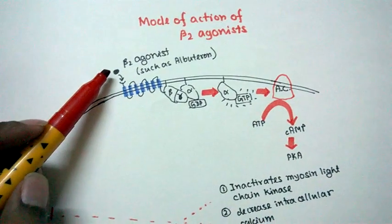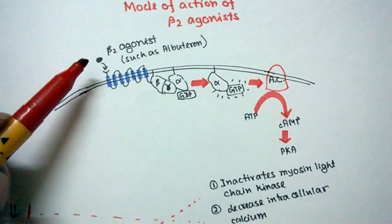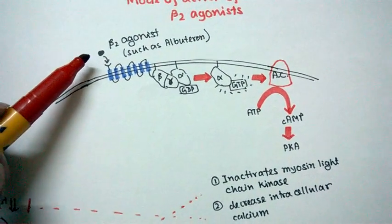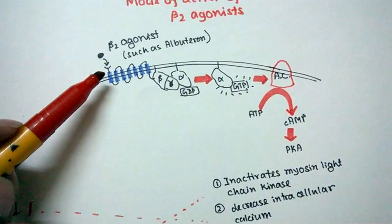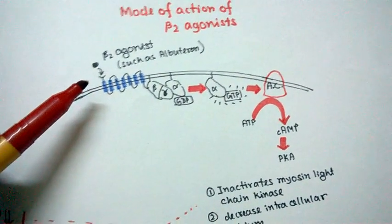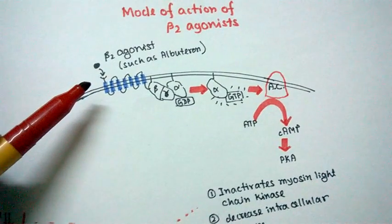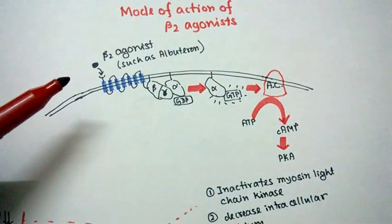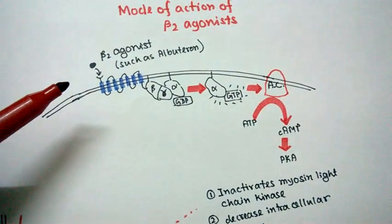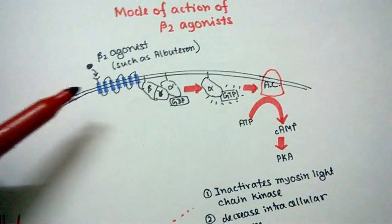Here, let us assume this dot represents a beta-2 agonist such as albuterone. This beta-2 agonist binds to its receptor, the beta-2 receptor on the lung. The beta-2 receptor is found on lungs. This beta-2 receptor is a seven-transmembrane domain protein—it's a G protein-coupled receptor.